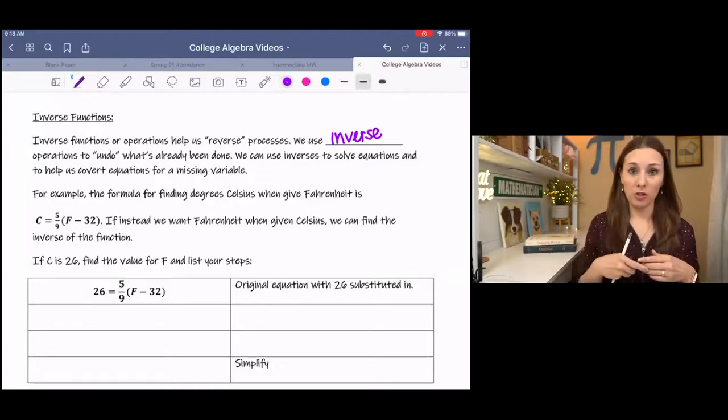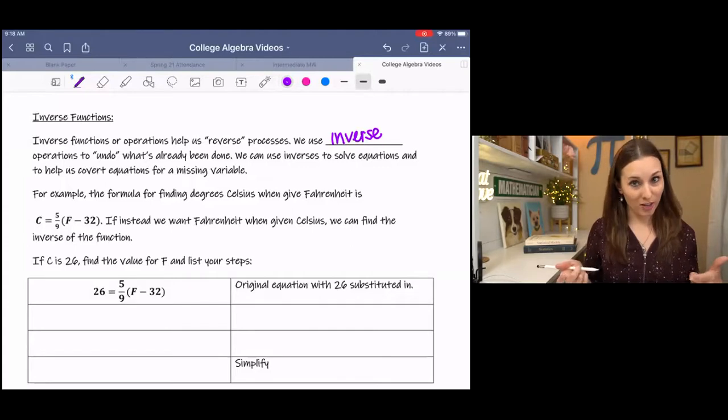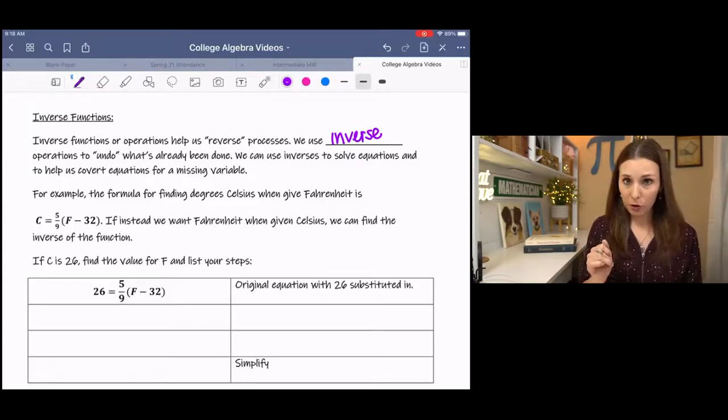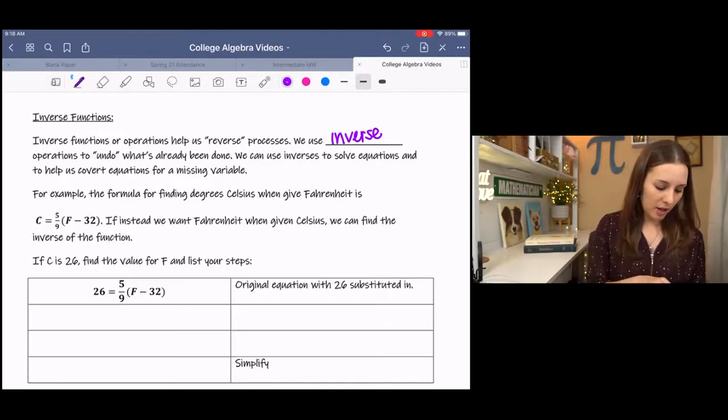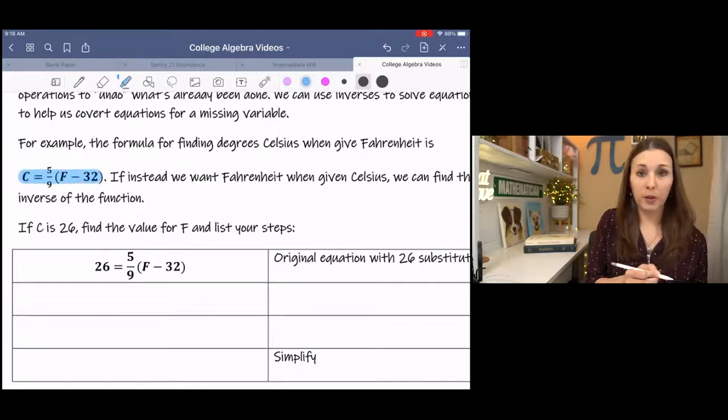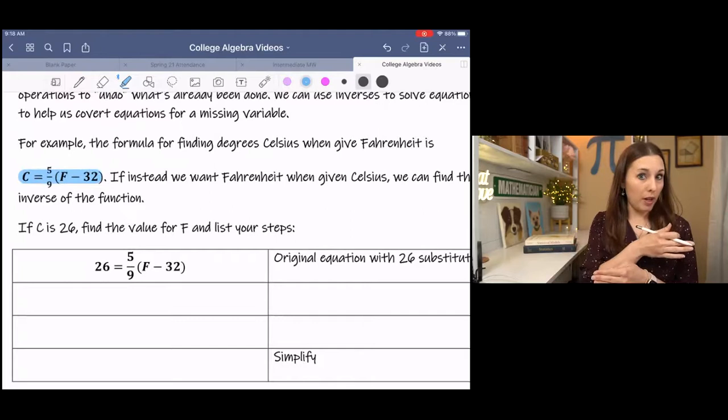And we will be using composition of functions as part of finding the inverses. So if you haven't watched that video, you might go back and watch it. We have a real-life formula for Celsius. And if we are given the degrees Fahrenheit, we can use this formula to find the degrees Celsius.